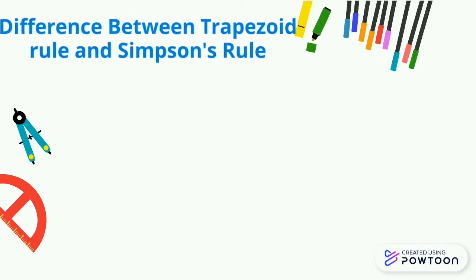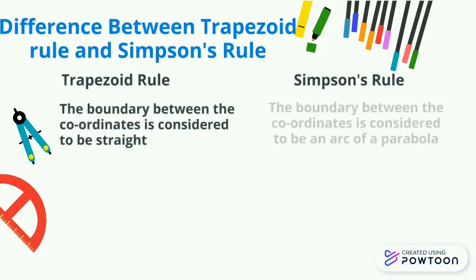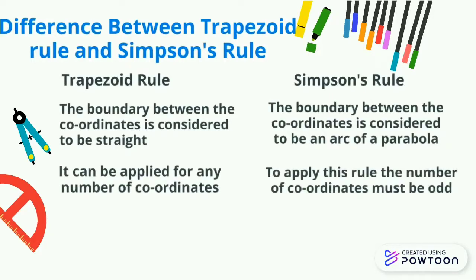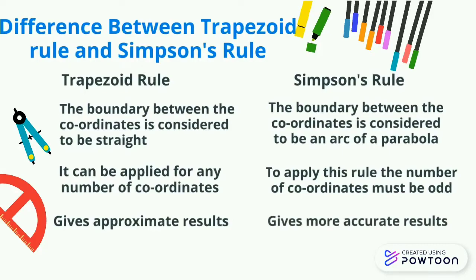The difference between trapezoid rule and Simpson's rule. Trapezoid rule: The boundary between the coordinates is considered to be straight. It can be applied for any number of coordinates. Gives approximate results.